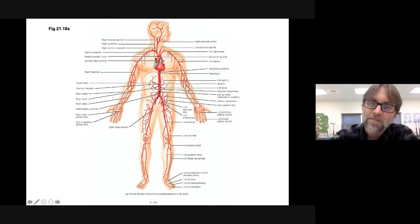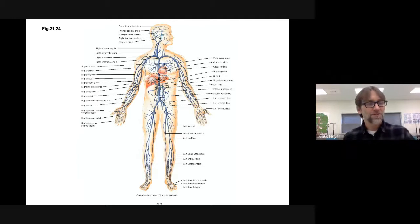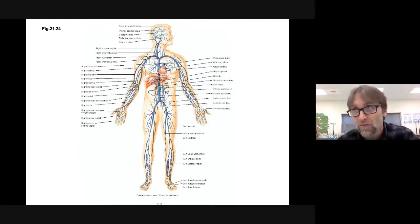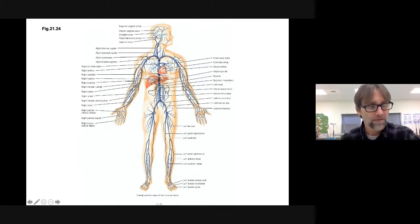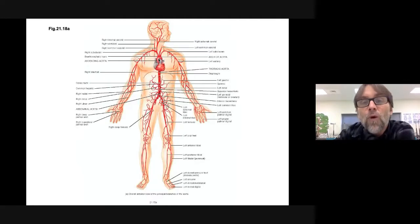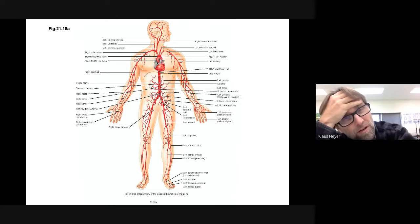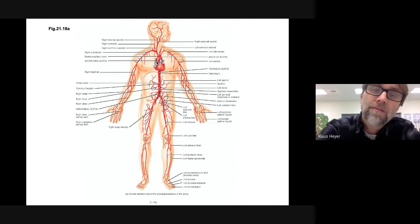Blood flows out through the aorta and back in through the vena cava. Think about where the vena cava empties — ask yourself whether it's oxygenated or deoxygenated blood; that gives you the side of the heart. The atria receive blood, so ask yourself which side. And what chamber is right before the aorta? Ask yourself: is it oxygenated or deoxygenated, and is the heart receiving it or shipping it out?